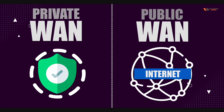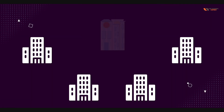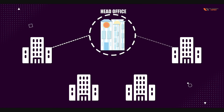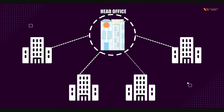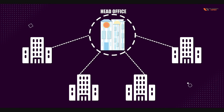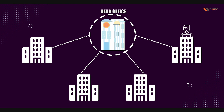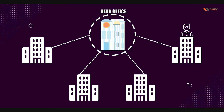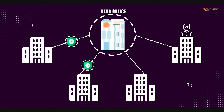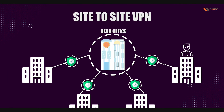Here you can see a business partner setup over the internet. This is the main site — the head office — and all the branch offices are connected to this head office. There is also a mobile worker doing work from home who can connect to the office as well. This type of connection is called site-to-site VPN.